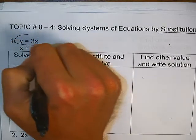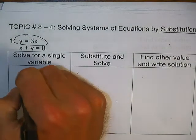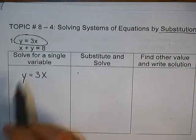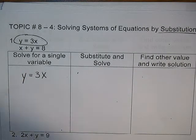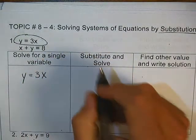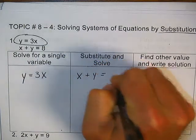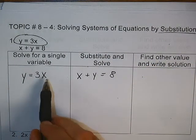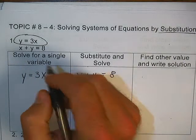They were nice to us — they've already done the first step for us. The y is by itself: y equals 3x. We have a variable by itself, so we can go on to the second step, which says substitute and solve. Take the other equation — in this case, it's x plus y equals 8. Looking back, y equals 3x, meaning y is the same thing as 3x.